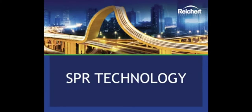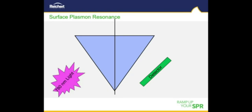I will now transition into talking about the concept of SPR. To induce the surface plasmon resonance phenomenon, a wedge of polarized light spanning a range of incident angles is passed through a high refractive index prism under total internal reflection conditions. The light source implemented in Reichert's SPR systems is a bank of light-emitting diodes operating at 780 nanometers.